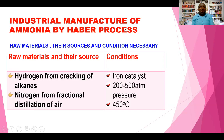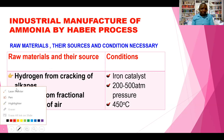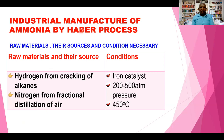We'll start by looking at the industrial manufacture of ammonia using a process called the Haber process. We need to look at the raw materials, their sources, and the conditions necessary — or rather what you call the optimum conditions.